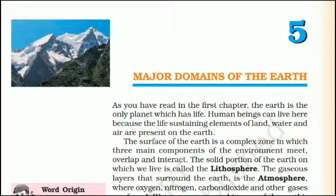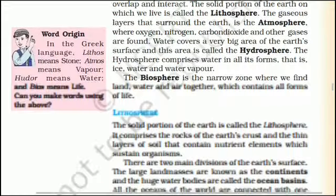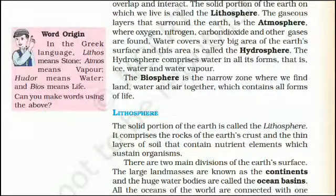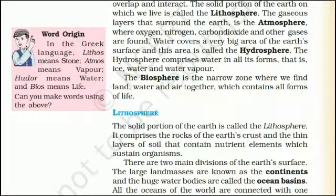The solid portion of the earth on which we live is called the lithosphere. The gaseous layers that surround the earth is the atmosphere, where oxygen, nitrogen, carbon dioxide and other gases are found. Water covers a very big area of the earth's surface and this area is called the hydrosphere. The hydrosphere comprises water in all its forms — ice, water and water vapor. The biosphere is the narrow zone where we find land, water and air together, which contains all forms of life.